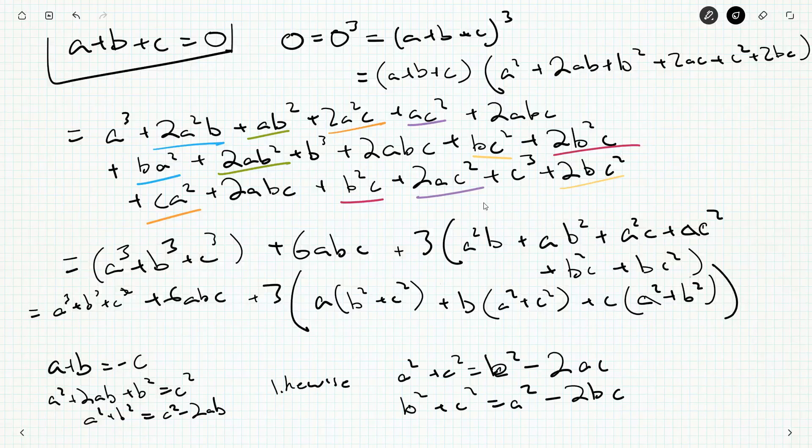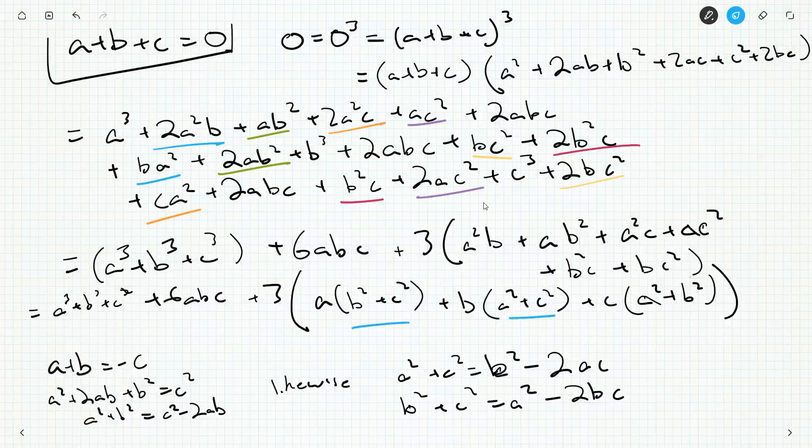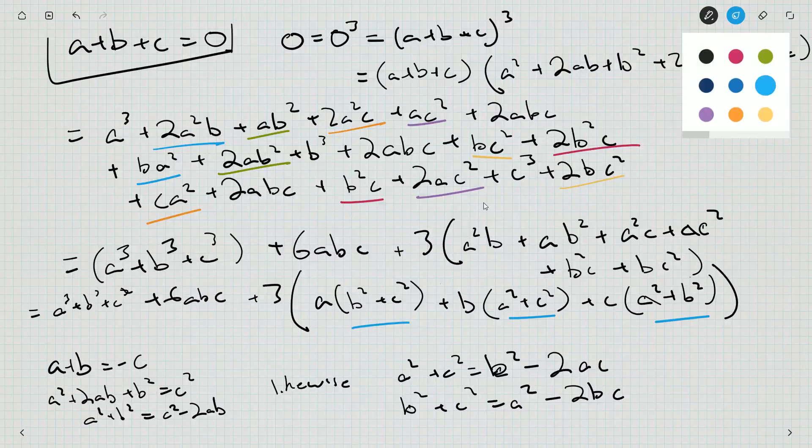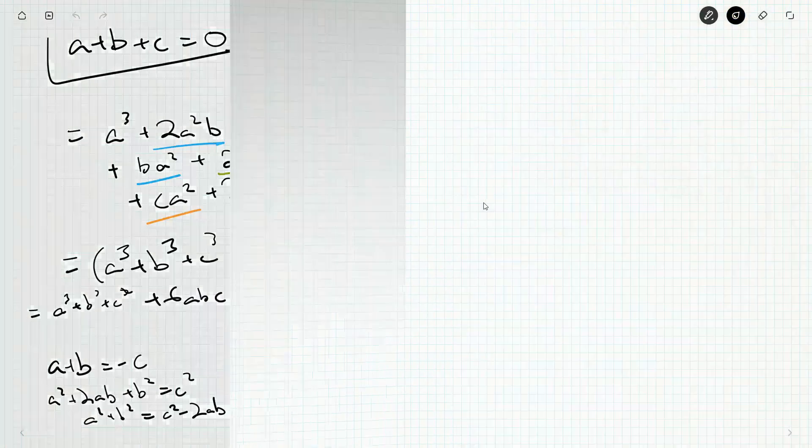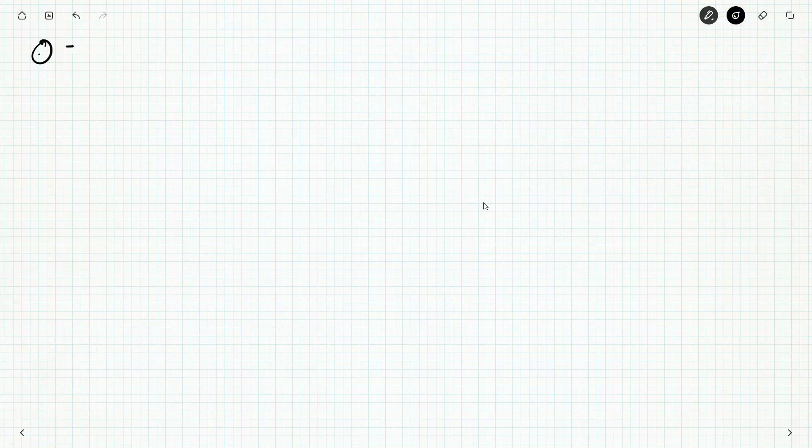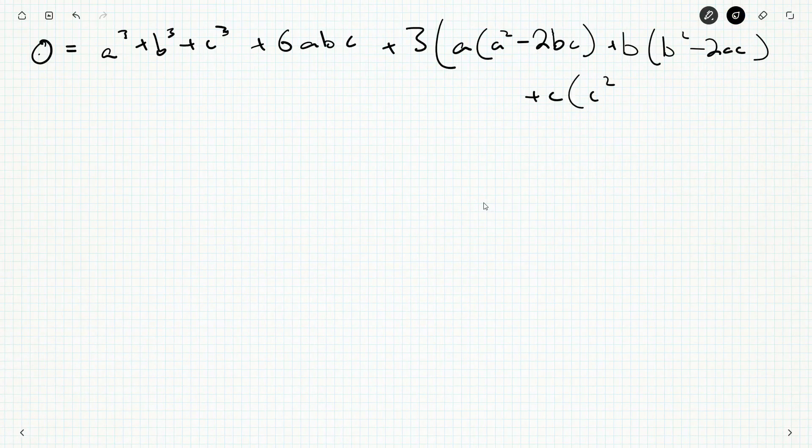So, now I can take these and sub them in here. And I am just fiddling around here. I don't quite have a direction, but we're going to copy this. So, 0 equals, and we've got a cubed plus b cubed plus c cubed plus 6abc. And now we've got plus 3ab, a squared minus 2bc. Plus bc, b squared minus 2ac. Plus ca, c squared minus 2ab.